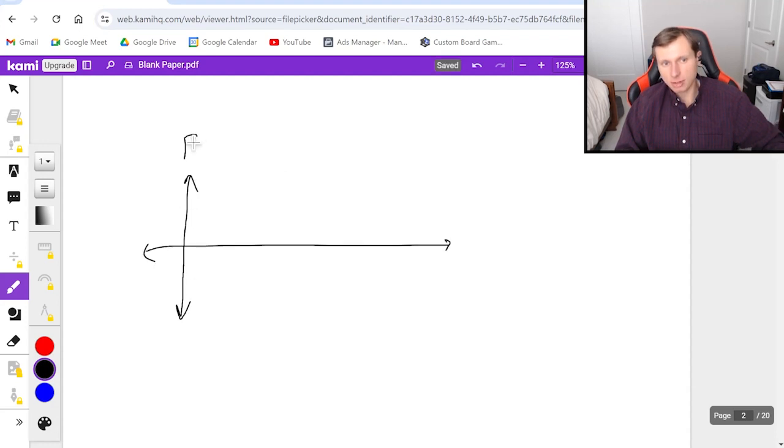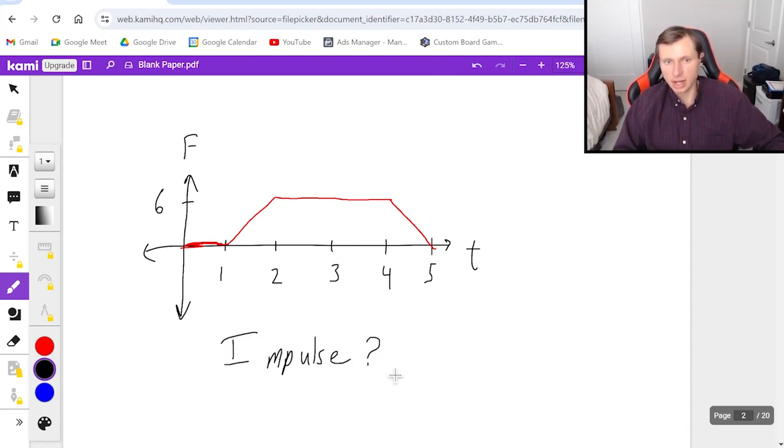I have a graph of force versus time. And then this is what the graph's going to look like. Starts out flat, then increases to six, is flat until four, and then comes back down at five. And my question is going to be, what is the impulse for this scenario? So go ahead, give it a try. And if you get stuck, unpause the video. So here we go.